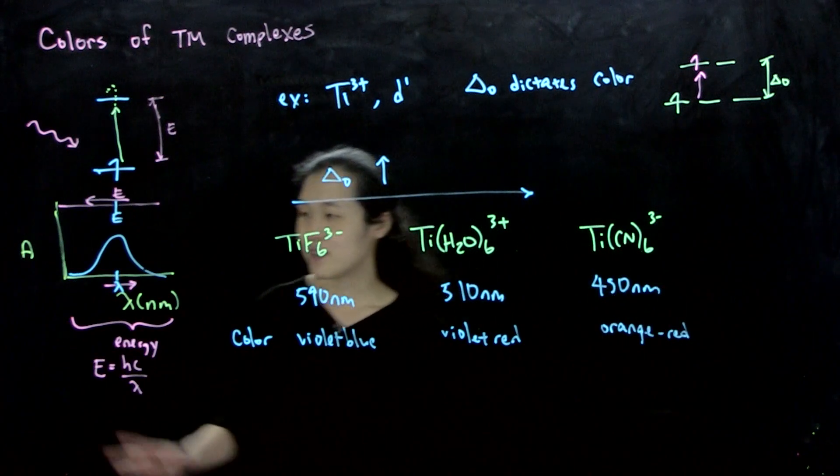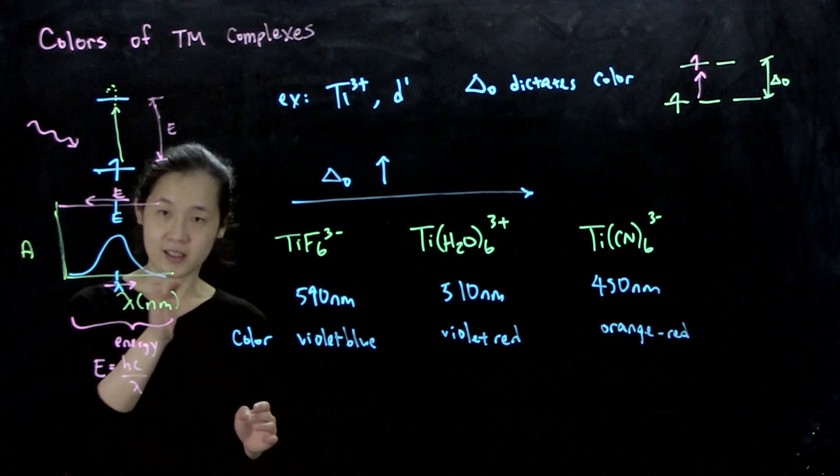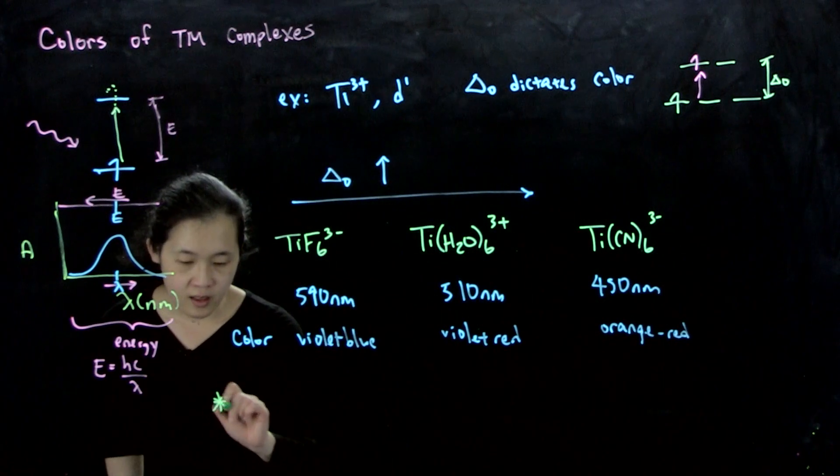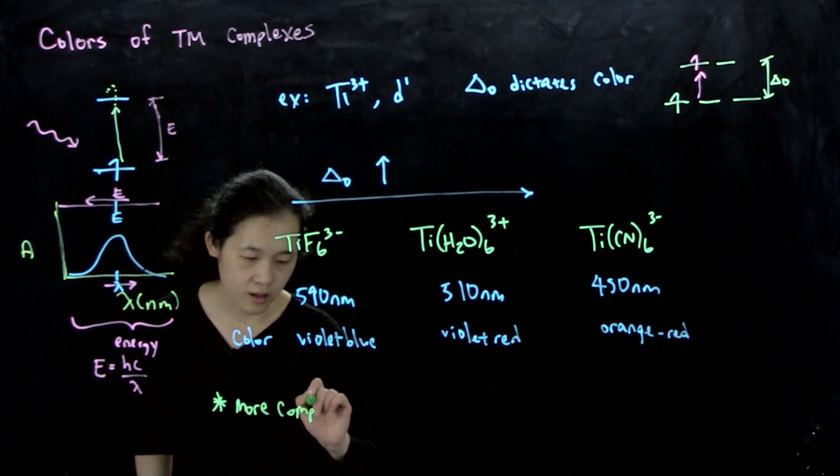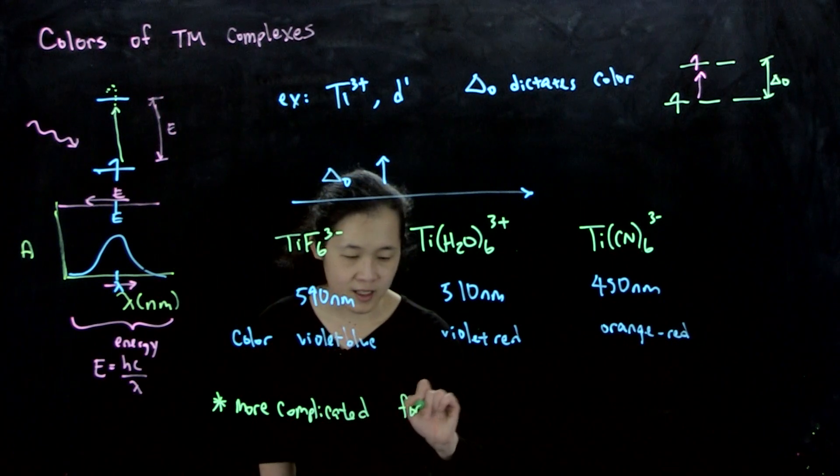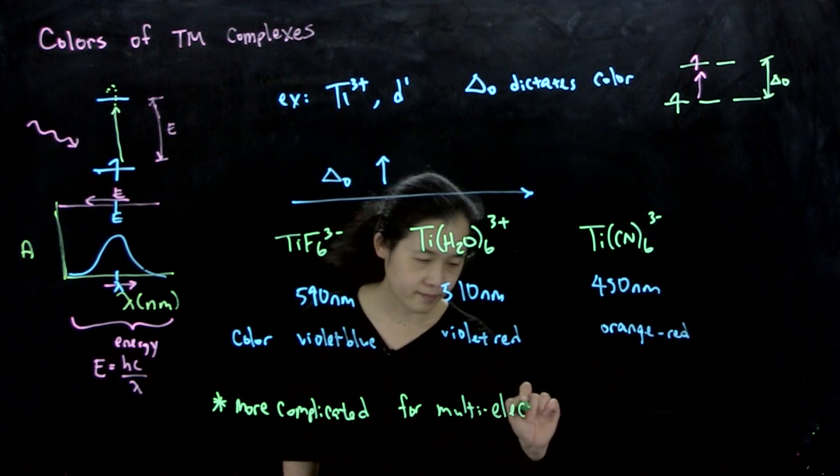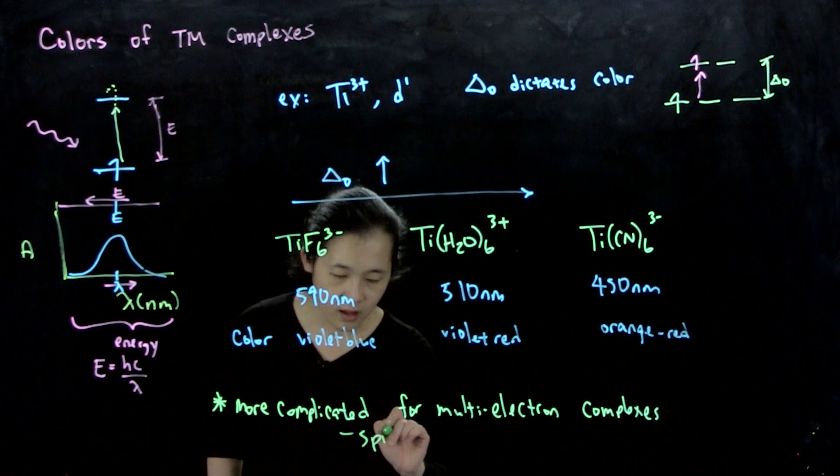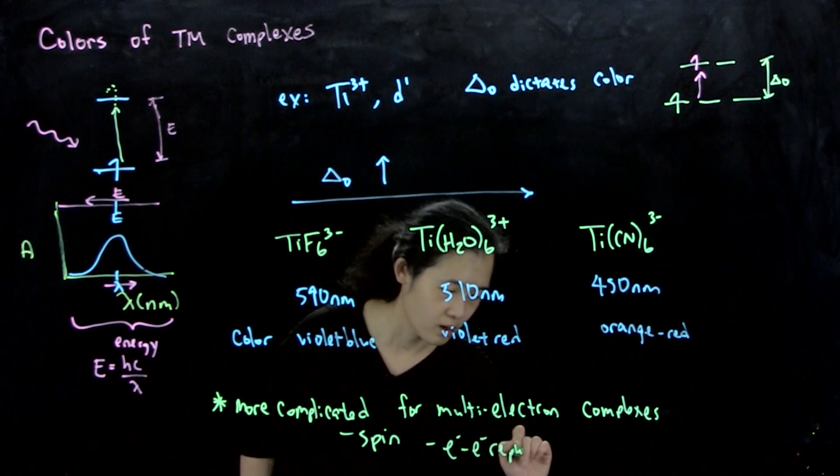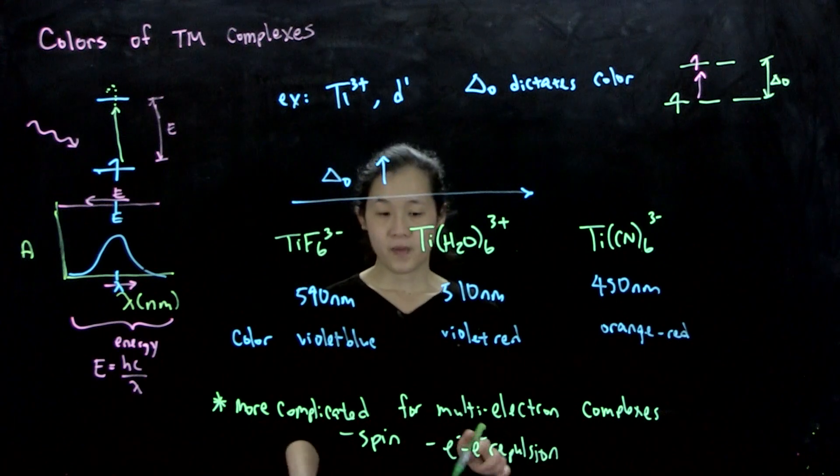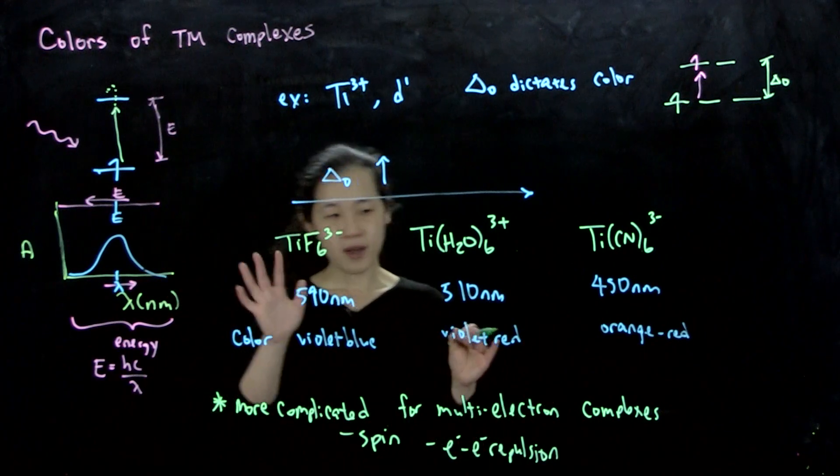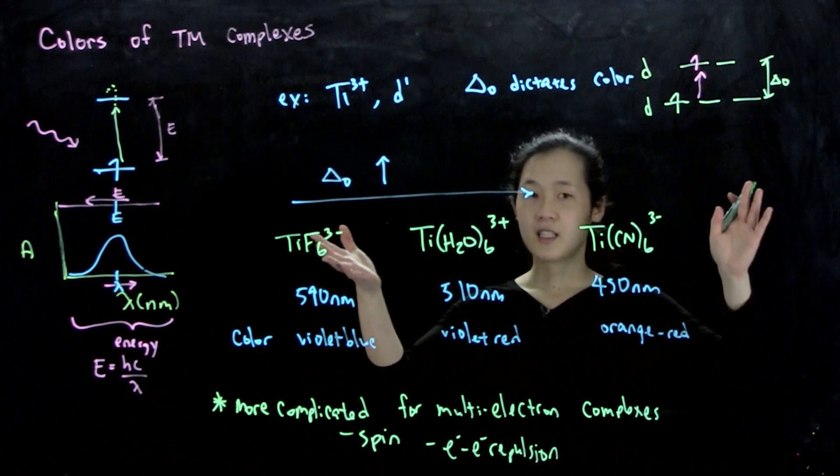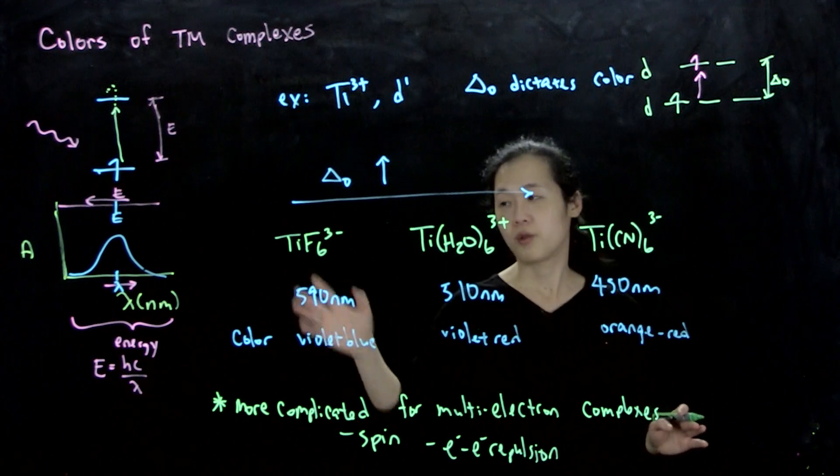So that's color. The key thing, don't get confused. Color is not the y-axis of absorption, it's the x-axis. This is the energy, and this is what we see when we're trying to think about delta O. More complicated for multi-electron complexes. I'll show you an example of this in class. But for our purposes, we're mostly just going to think about how color relates to delta O for d-d transitions. This is called a d-d transition because these are d orbitals. This is kind of the basics of what we need to know. Delta O dictates what color we see.